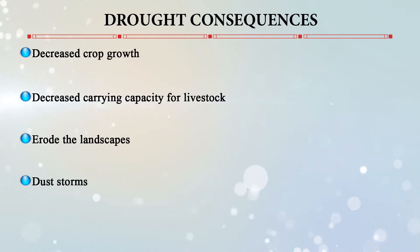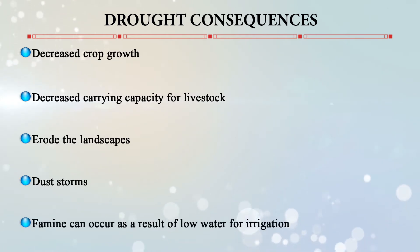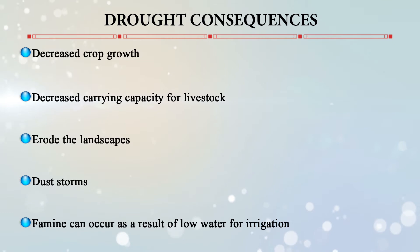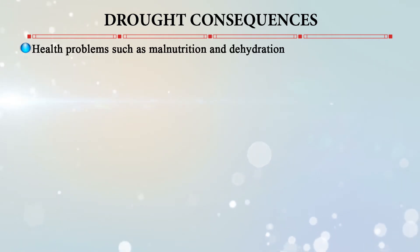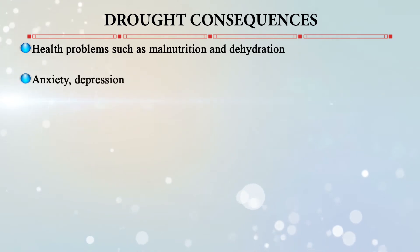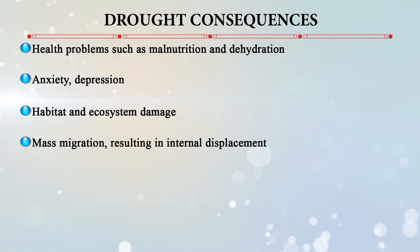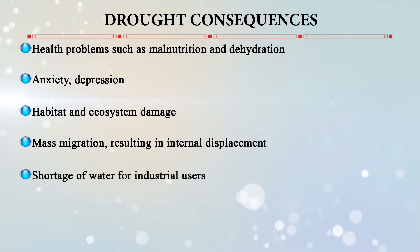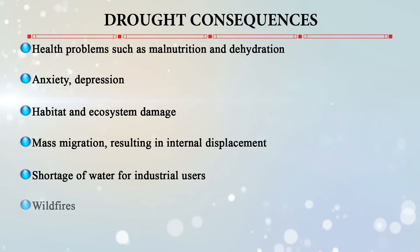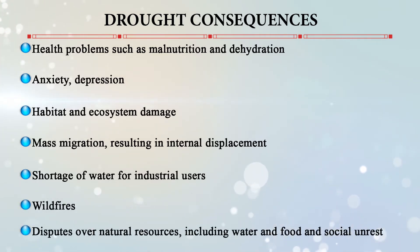Dust storms can occur, and famine can result from low water availability for irrigation. People living in affected areas suffer greatly, and there have been media reports of farmers committing suicide due to extended drought periods with no water and failed crops. Other consequences include health problems such as malnutrition and dehydration, anxiety, depression, habitat and ecosystem destruction, mass migration and internal displacement, water shortages for industrial users, wildfires, disputes over natural resources, and social unrest.